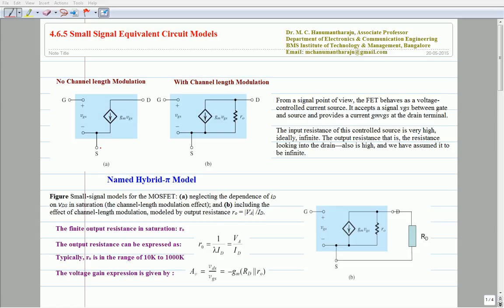However, from our study of the MOSFET characteristics in saturation region, we know that drain current does in effect depend on drain source voltage in a linear manner. Such dependence was modelled by a finite resistance R-naught between the drain and source.